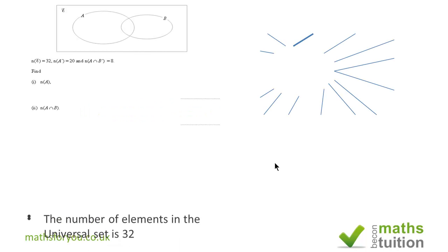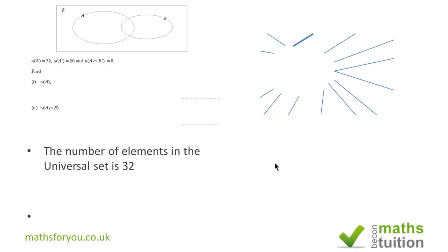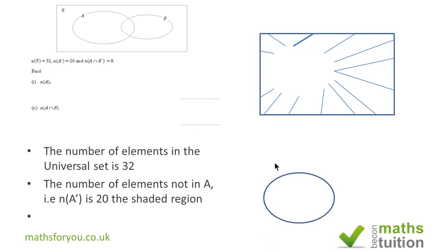Here is the question and we are told that there are 32 in the universal set and of those we know that the number of elements not in A whatsoever is 20, which means that there are 12 elements left.